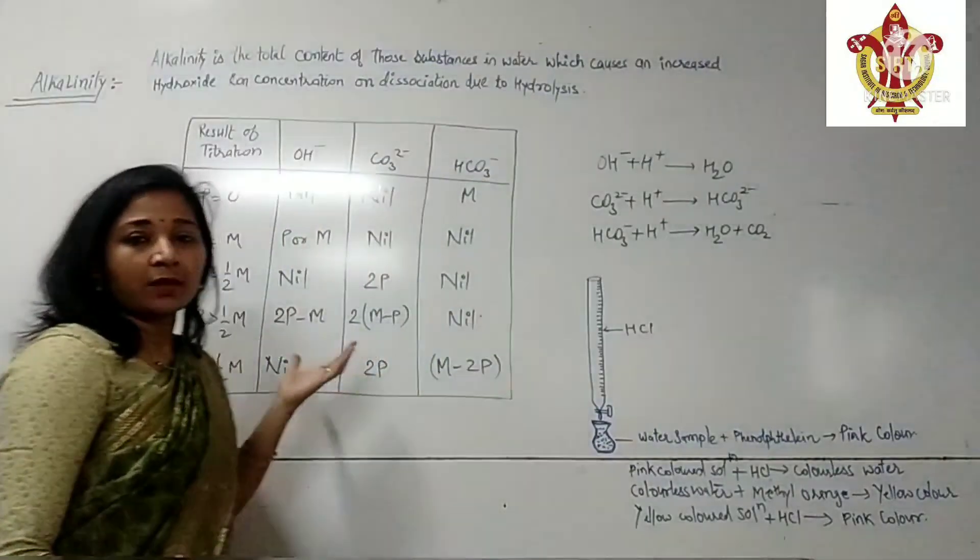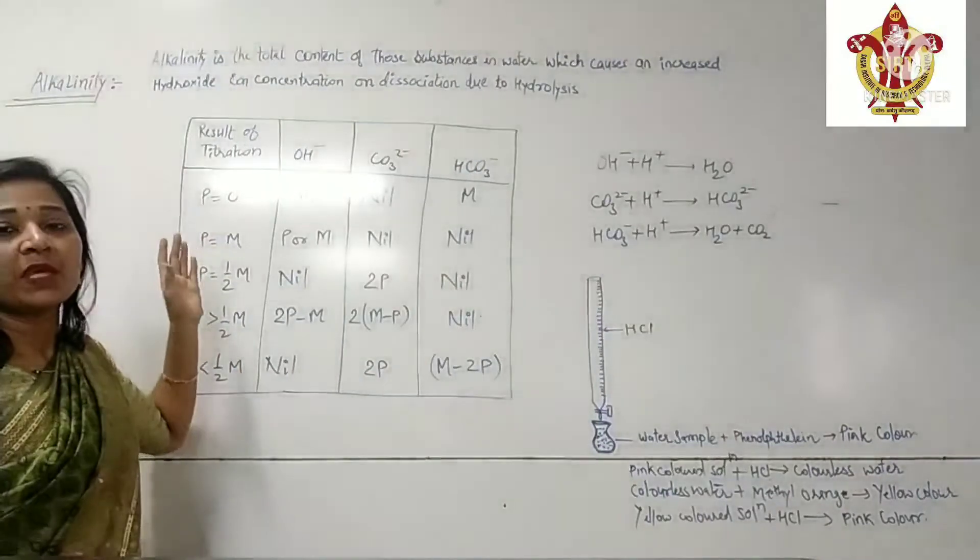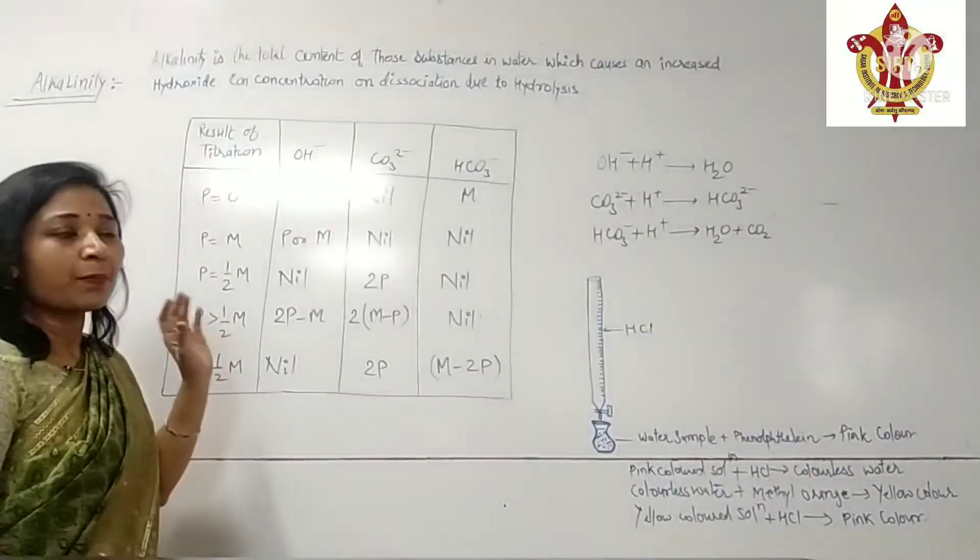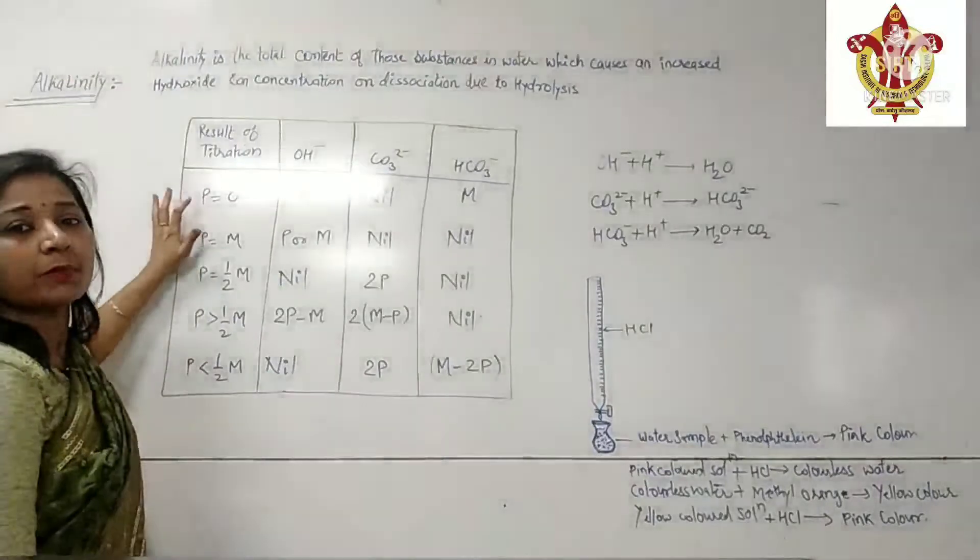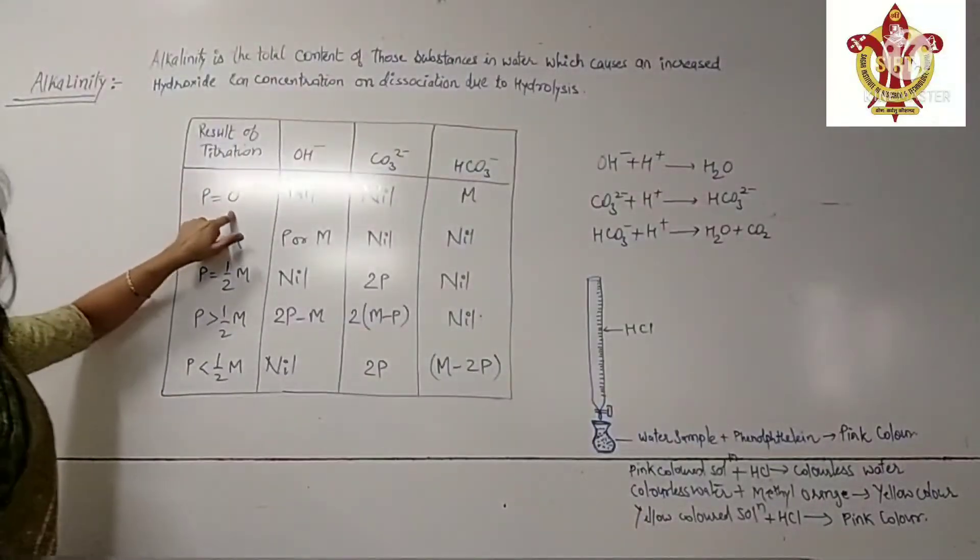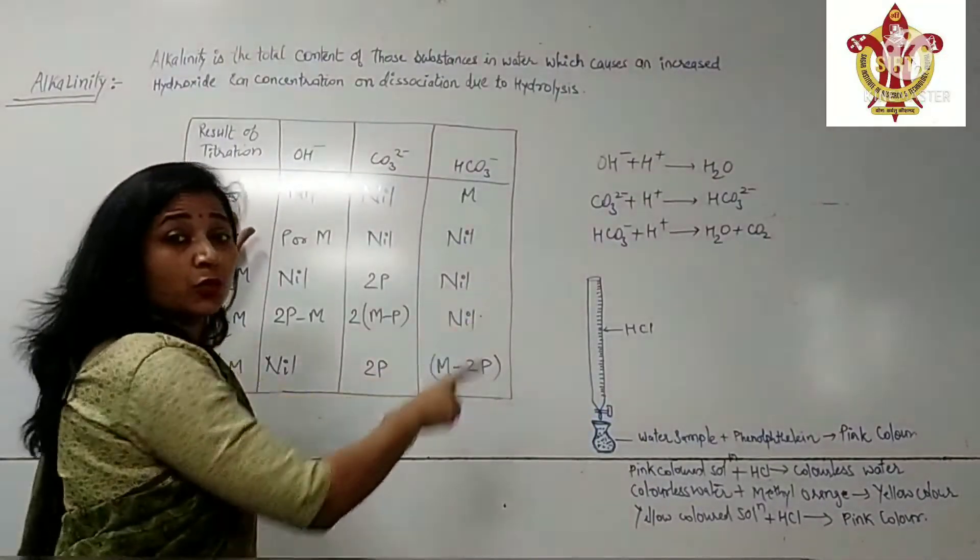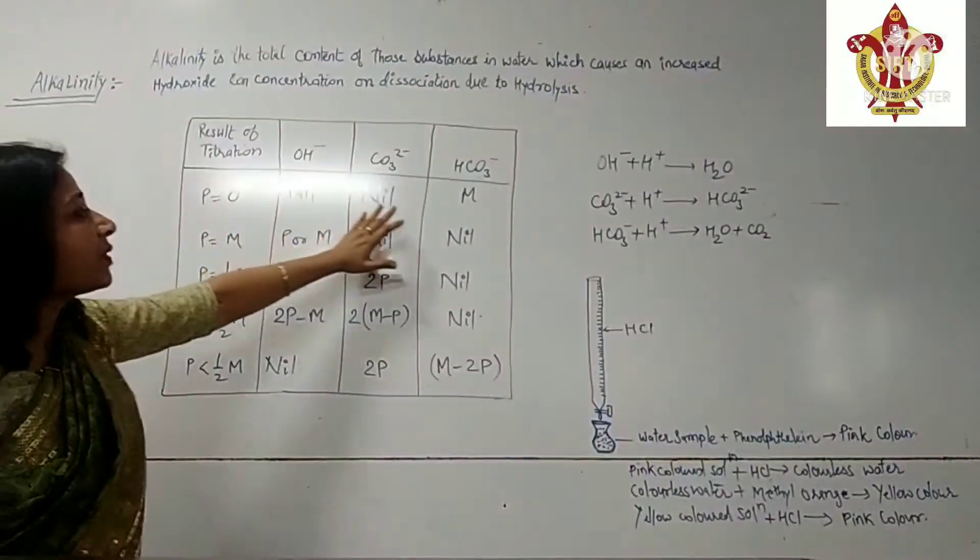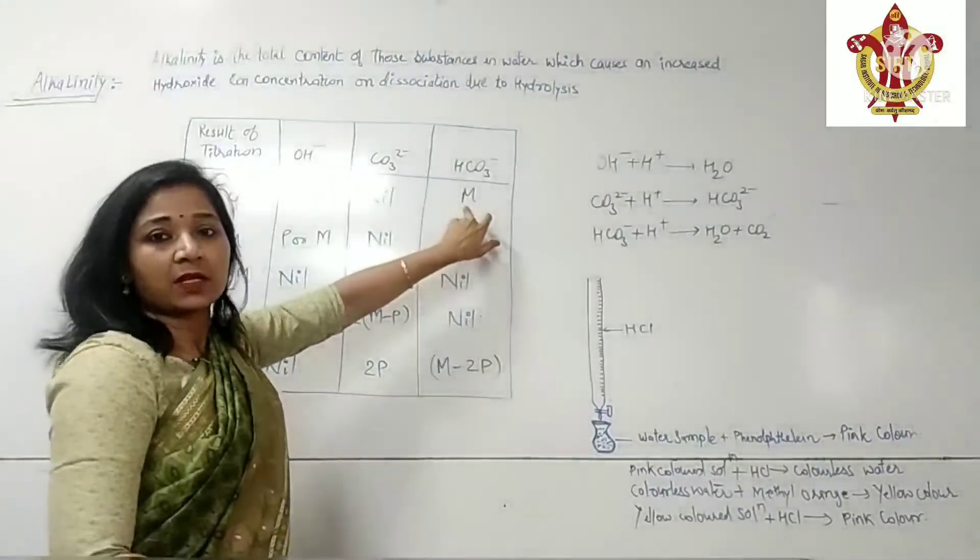Now, this is the table. That table shows the values of P and M and their comparison. When P is equal to 0, when the value of P comes to 0, then only bicarbonate ion is present in the water sample.